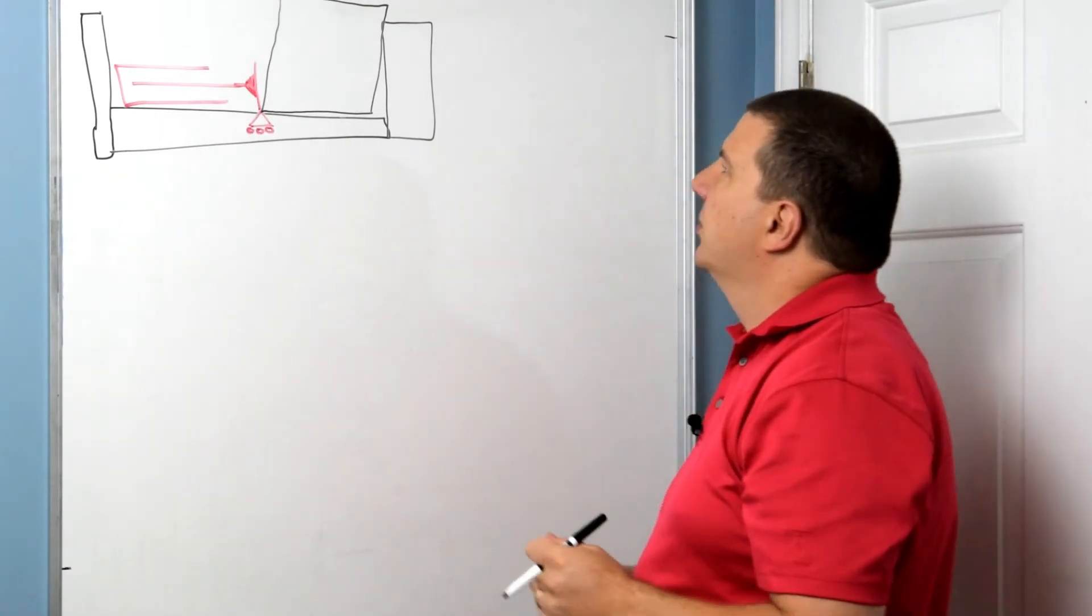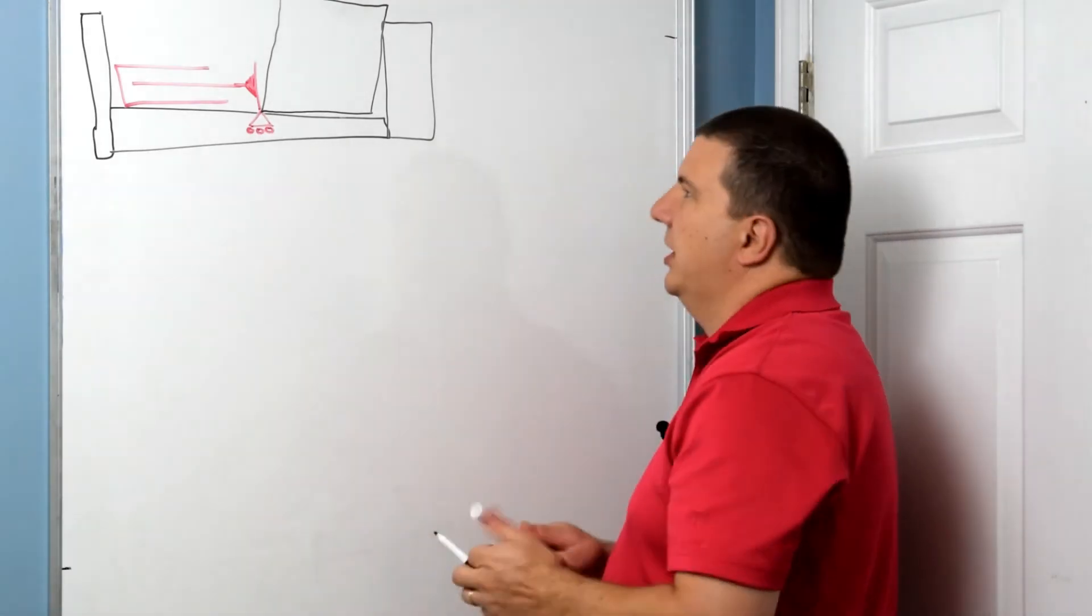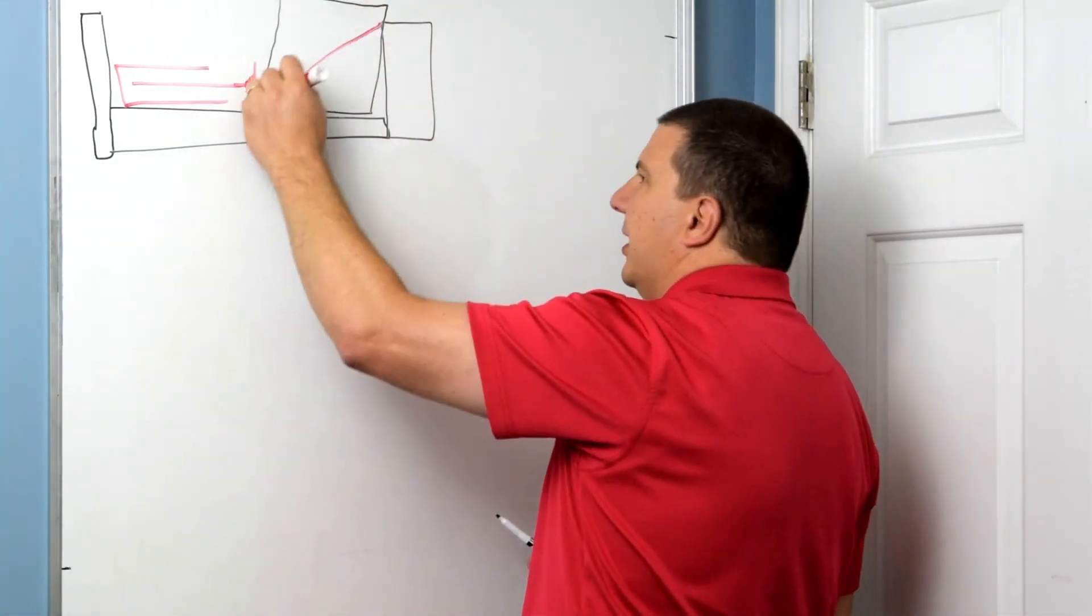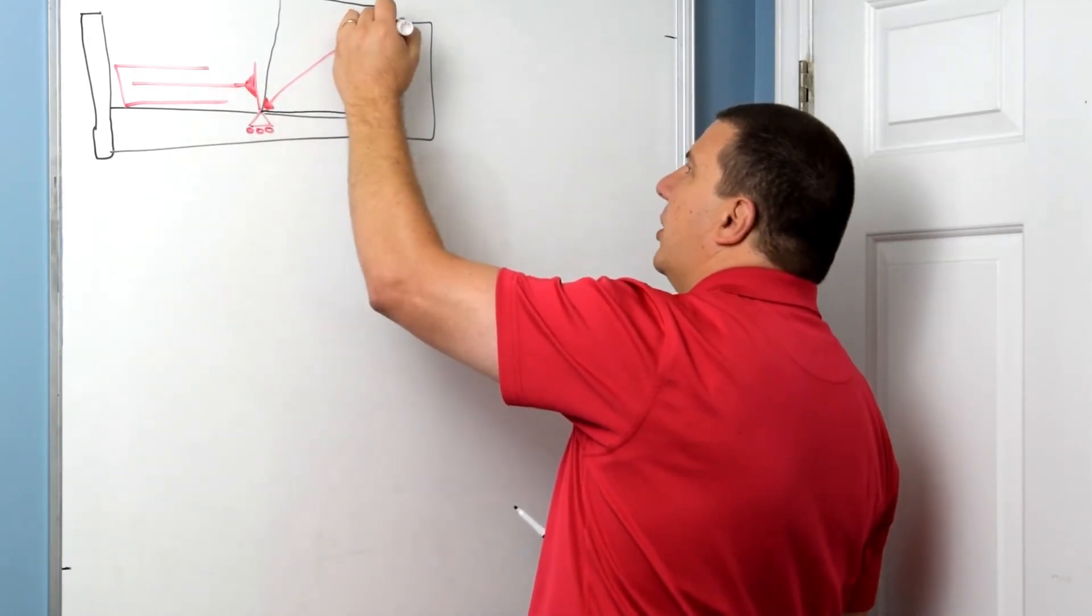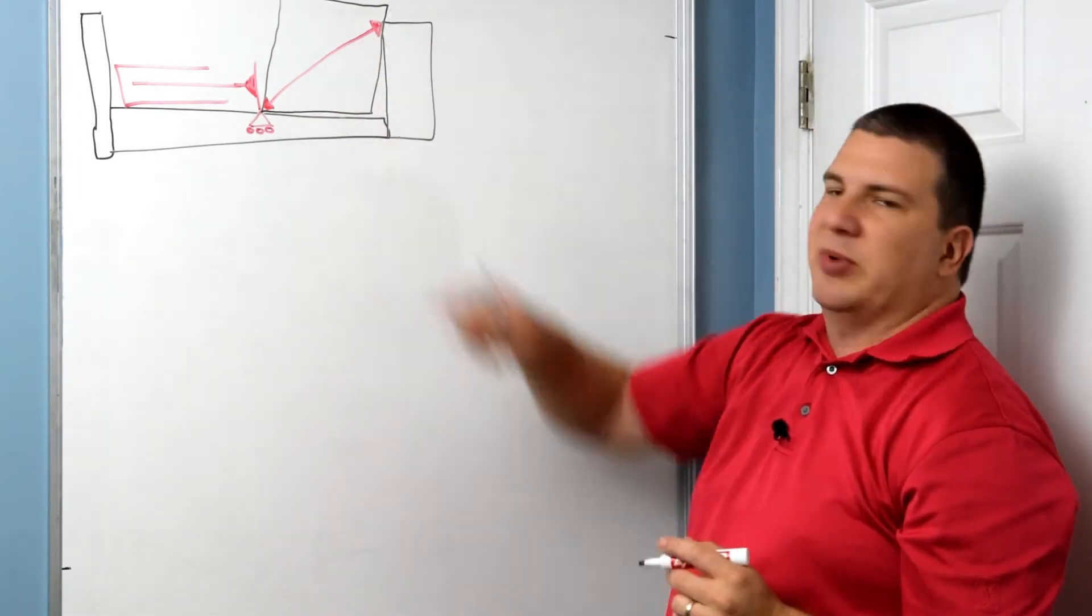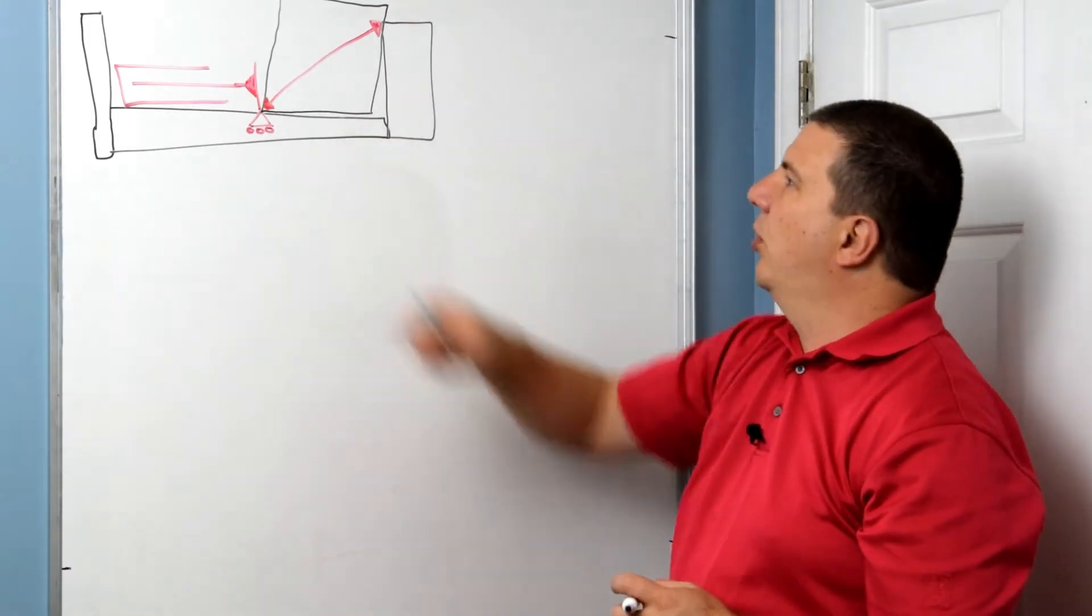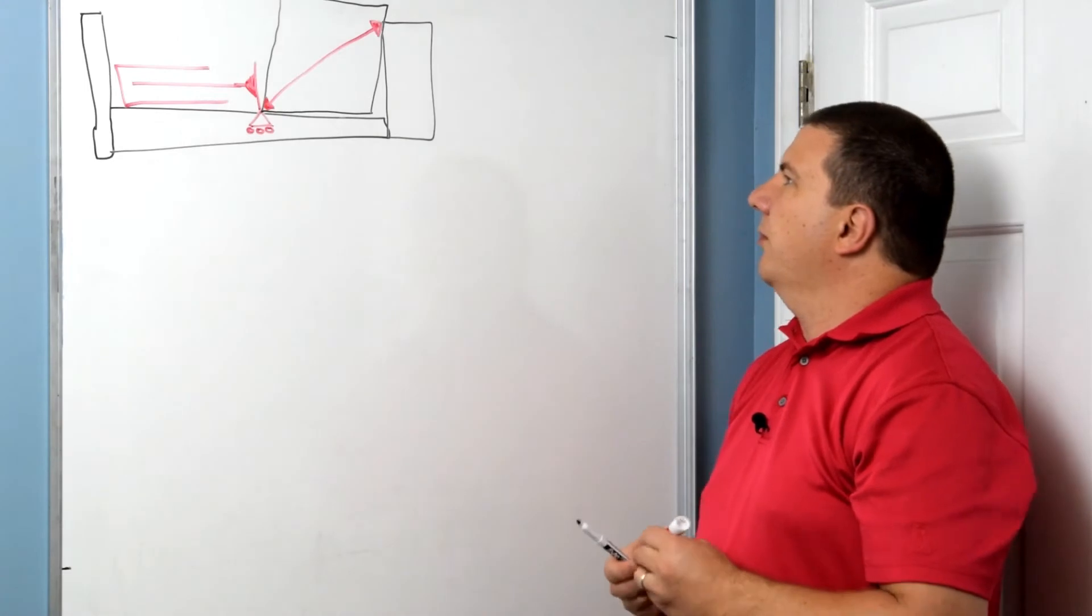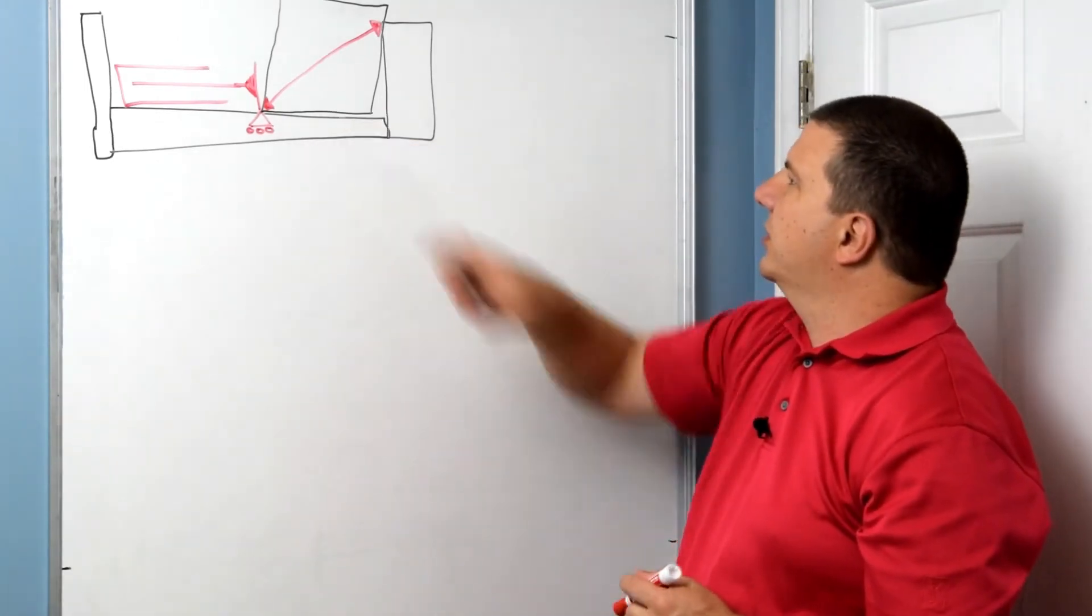All right, so what happens here is this log becomes essentially a two-force member. If you think like a rope, that's a two-force member because it can only pull along its axis. So our log can only be split across from those two, with a force through those two points. All right, now let's start looking at what's going on here.